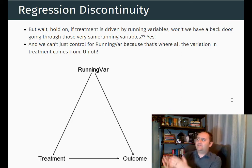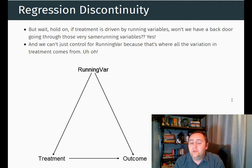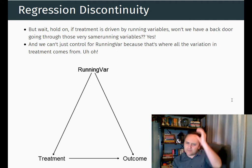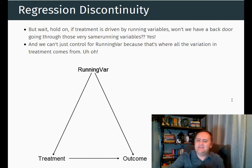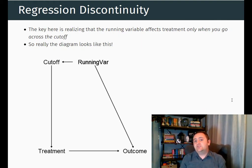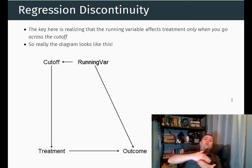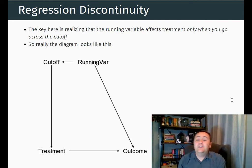Whereas the difference between an 89 and a 91, that does account for whether you get in or not. So really, the diagram doesn't really look like this — it looks sort of like this. We have the running variable, and the running variable affects treatment, but only to the extent that it makes you go over that cutoff.